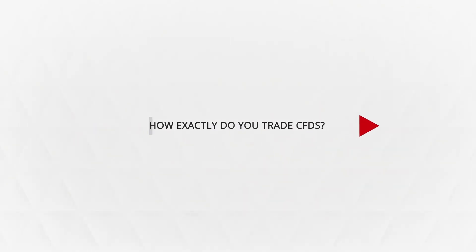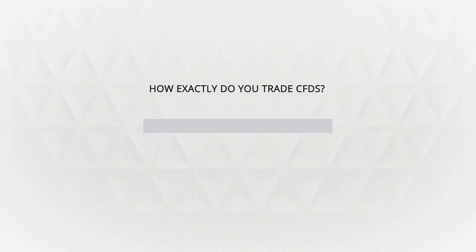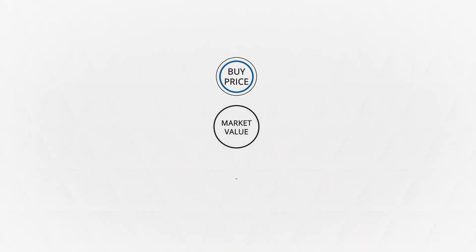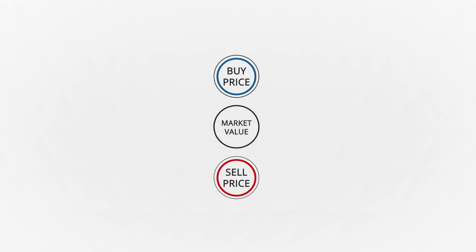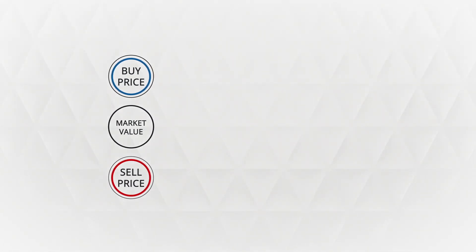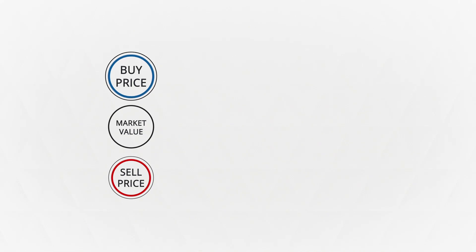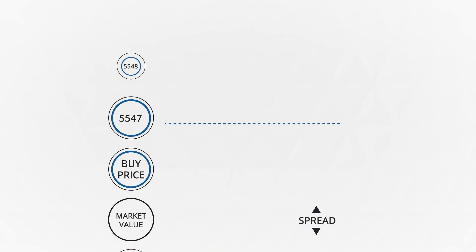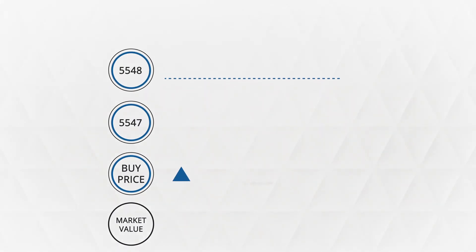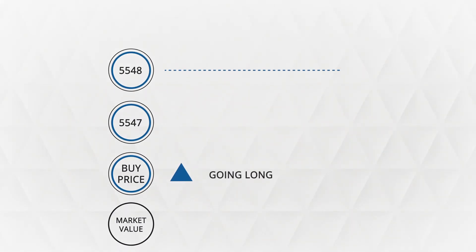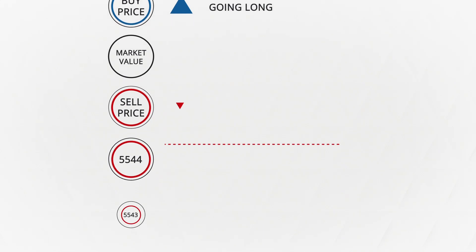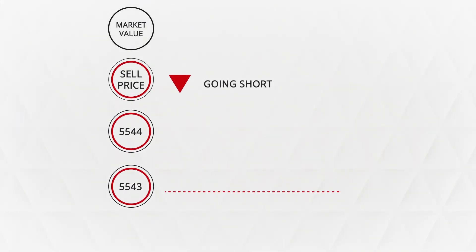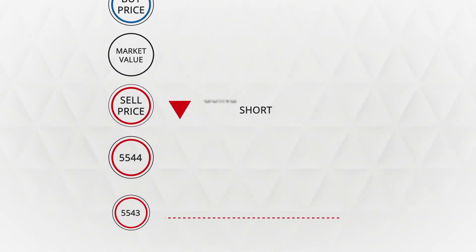So how exactly do you trade CFDs? Well, each contract has a buy and a sell price. Sell prices are slightly lower than the current market price, and buy prices slightly higher. The difference between the two is referred to as the spread. If you think the market will rise, you would buy — this is called going long. Or if you think the market would fall, you would sell, known as going short.